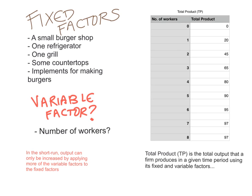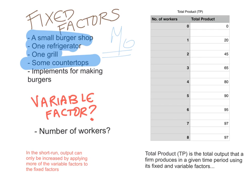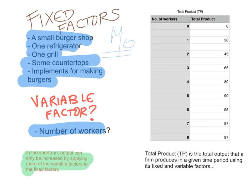Let's take an example. Assume there's an owner — we'll call him Mo. Mo owns a small burger shop. In that burger shop he has one refrigerator, one grill, some countertops and implements for making burgers. These are Mo's fixed factors. Mo's variable factor is the number of workers. In the short run, output can only be increased by applying more of the variable factors to the fixed factors, so all Mo can change is to add more and more workers.